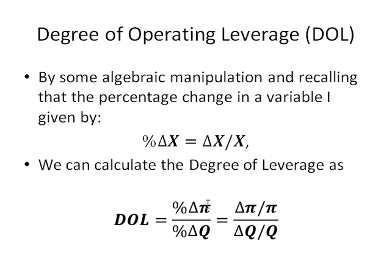Thus, we can make the same substitution in our degree of leverage calculation, not only for percent change in profit, but also for percent change in quantity. So, I'm using pi here to denote profit. You'll notice percent change in pi is just delta pi over pi, just like the percent change in Q here is just delta Q over Q.